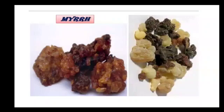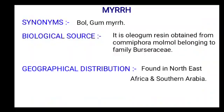Third drug: myrrh. Synonym of myrrh: bowl, gum myrrh. Biological source: it is an oleogum resin obtained from Commiphora molmol belonging to family Burseraceae. Parts used: oleogum resin. Species: Commiphora molmol. Family: Burseraceae. Geographical distribution: found in northeastern Africa and southern Arabia.